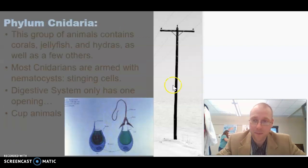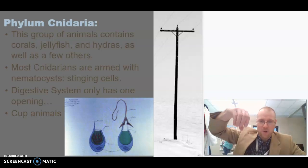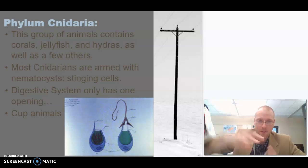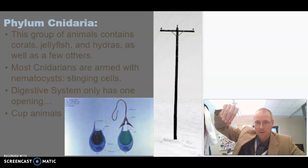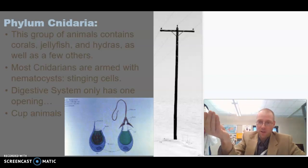Our next phylum are the cnidarians. Cnidarians are sometimes called cup animals, which I think is a terrible name, but that's because like jellyfish are cup-shaped. So the cnidarians includes coral, jellyfish, and hydras. Most people don't think of coral as an animal, but it is. Take a jellyfish, turn them upside down, and you give them a bony shell.